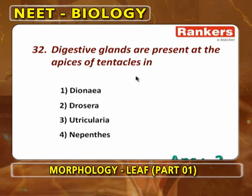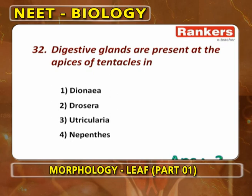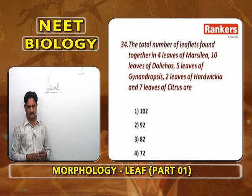Digestive glands at tip of tentacles: Drosera. In Nepenthes they are in the pitcher; in Utricularia they are in the bladder; in Drosera they are at the tentacle apices. Non-succulent phylloclade with scale leaves in whorled phyllotaxy is Casuarina.